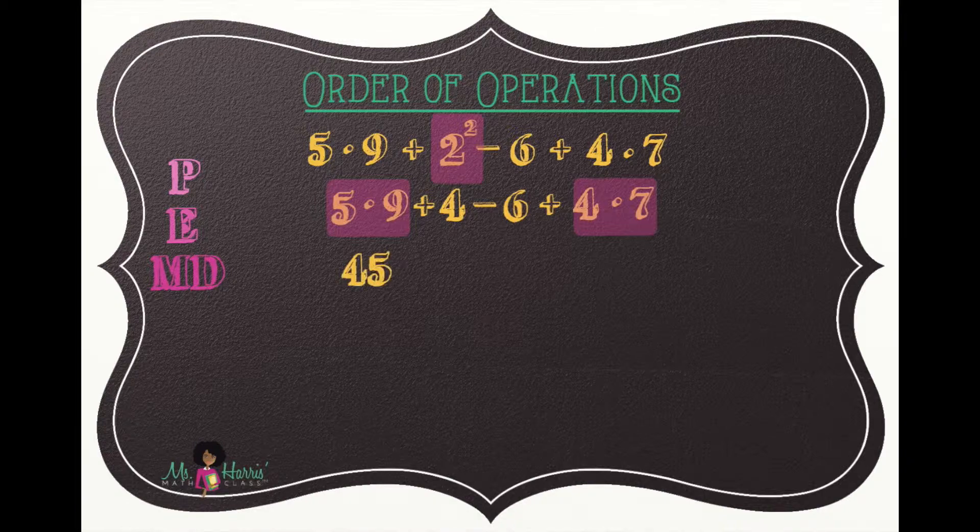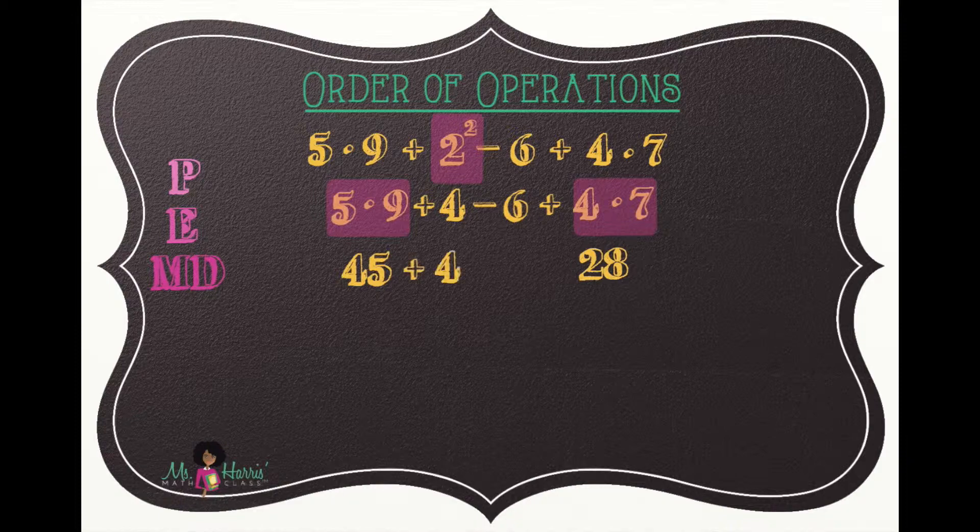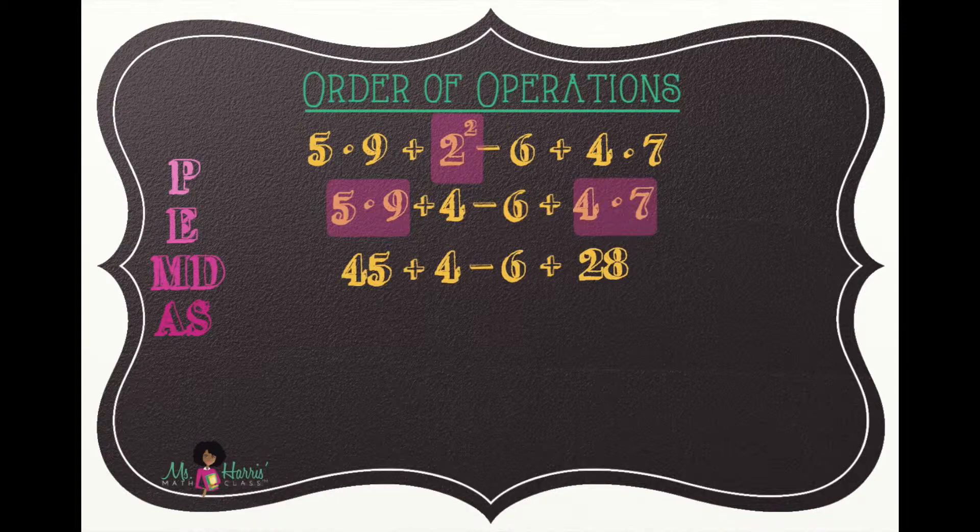Five times nine is 45, and four times seven is 28. Then we bring down the remaining numbers and operations. We move to addition and subtraction, remembering to go from left to right.